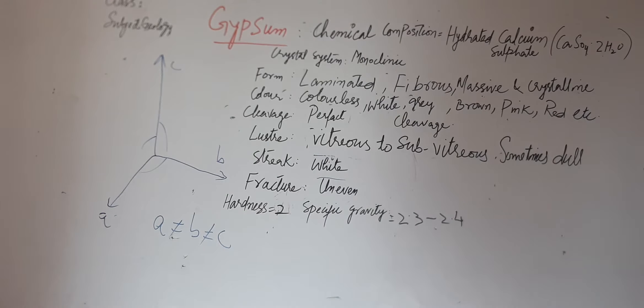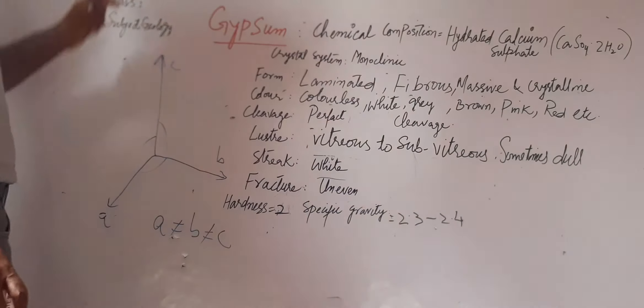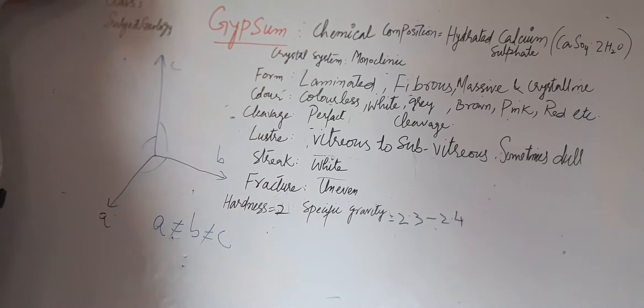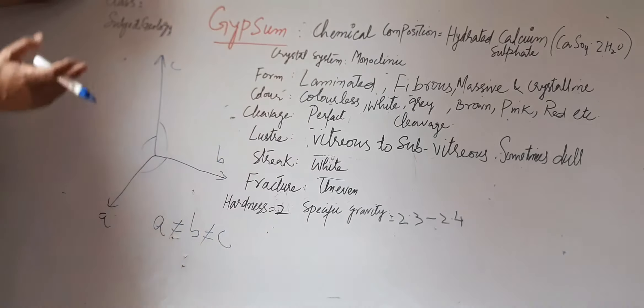Cleavage: it has a perfect cleavage. Luster: vitreous to sub-vitreous luster. Luster is a shining property which is shining like glass. Sub-vitreous is somewhat shaded glass.